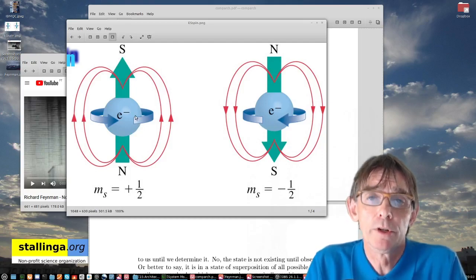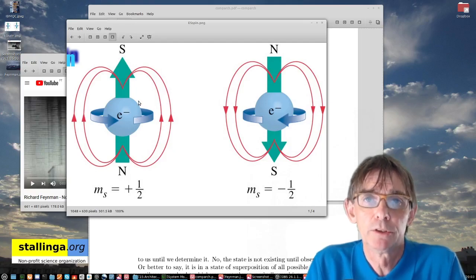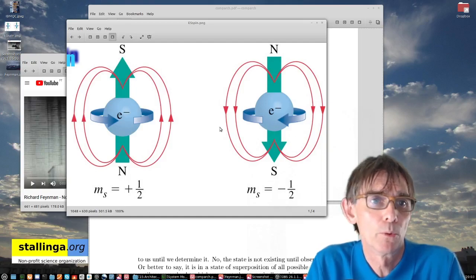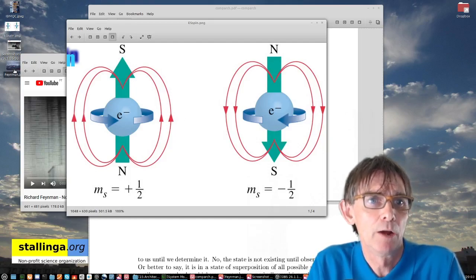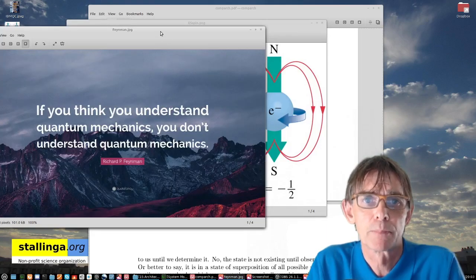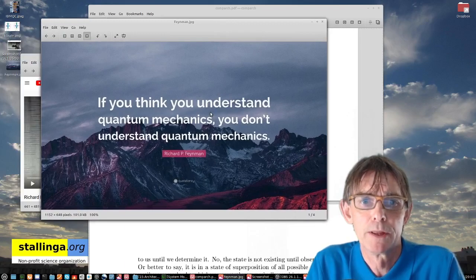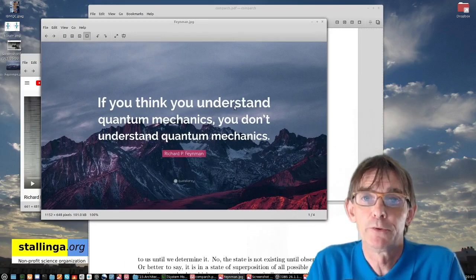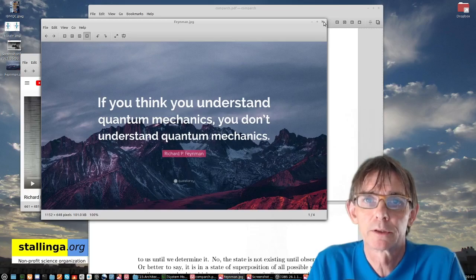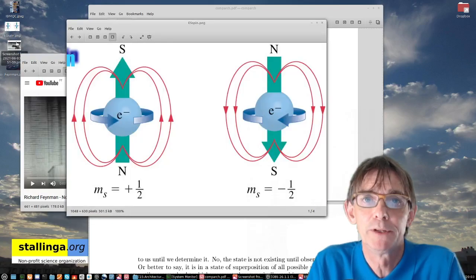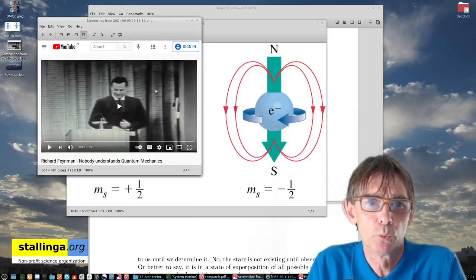And that means that only when we start observing it, then the spin, so-called, the wave function as we call it, it collapses. So only when we observe it, the spin becomes up or down. So if you think this concept is strange, I would like to remind you of the famous talk of Mr. Feynman, where he said, if you think you understand quantum mechanics, you don't understand quantum mechanics. And this is how weird actually this, you can make this weird phrases and actually being right on top.